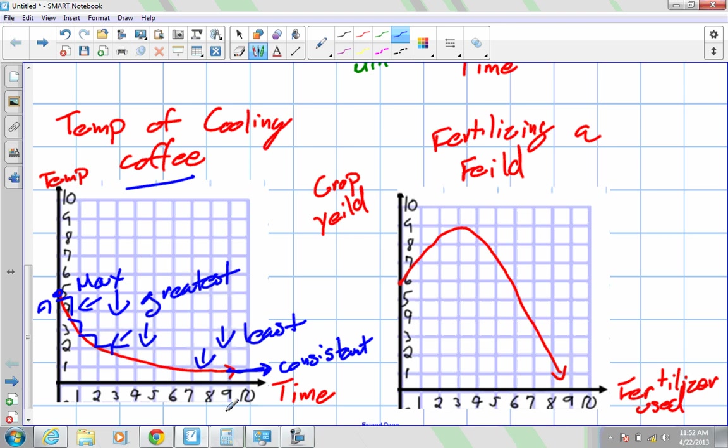And then finally, fertilizing a field. So we'll do a little description. Again, the numbers, don't worry too much about. I just want you to talk about the trend in this graph. Our y-axis is crop yield. In other words, the amount of corn we're able to grow, dependent on how much fertilizer we use.